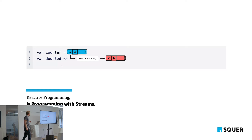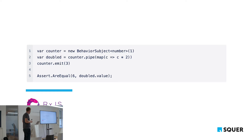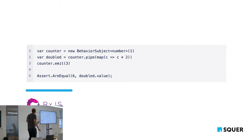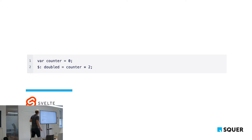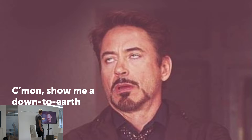In RxJS — popular in the Angular framework — we have a BehaviorSubject, basically a stream with an initial value of 1. We pipe the counter, map it, multiply by 2. And if we change counter to 3, doubled will automatically be 6. Modern frameworks like Svelte integrate the destiny operator natively — using a dollar sign in front of a variable makes it reactive, so it always updates when counter changes.